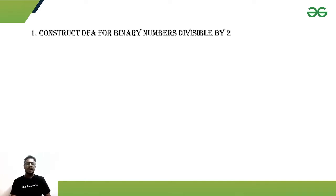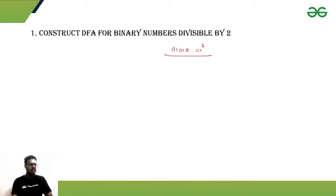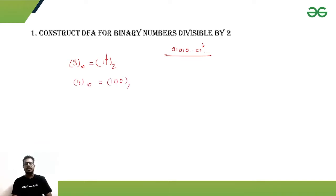First, let us understand how a binary number is divisible by two. A binary number is a string constructed using only the digits zero and one. For a string to be divisible by two, the least significant digit — that is, the rightmost digit — should be zero. For example, the decimal number three in binary is '11', where the least significant bit is one. But for an even number like four, the binary is '100', where the least significant bit is zero. So if the least significant bit is one, the number is not divisible by two, and if it is zero, the number is divisible by two.